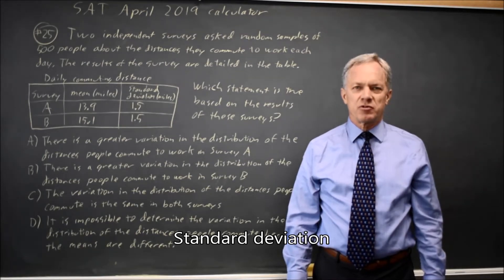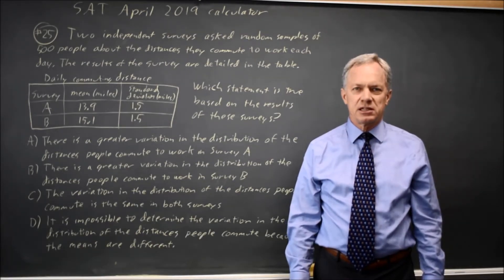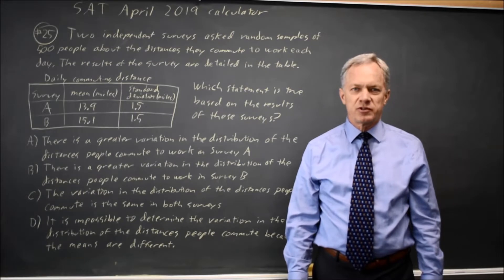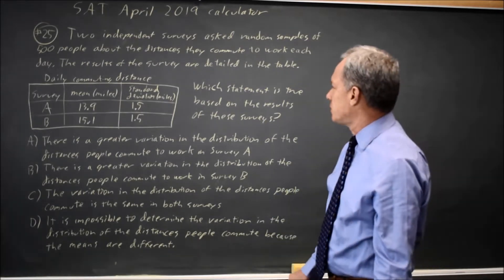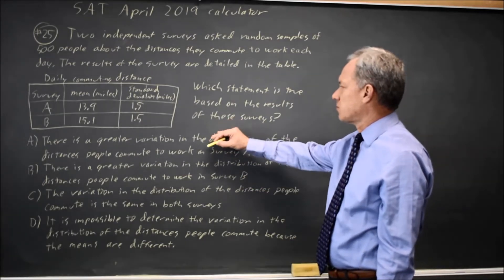This is calculator question number 25 from the April 2019 SAT. College Board asks about two surveys that had different means and the same standard deviation. And their question is, which statement is true based on the results of these surveys?